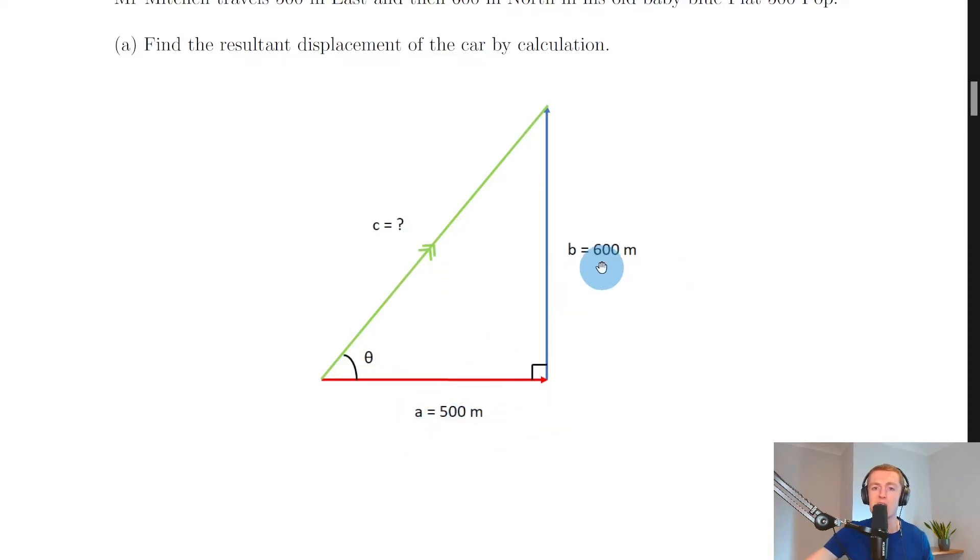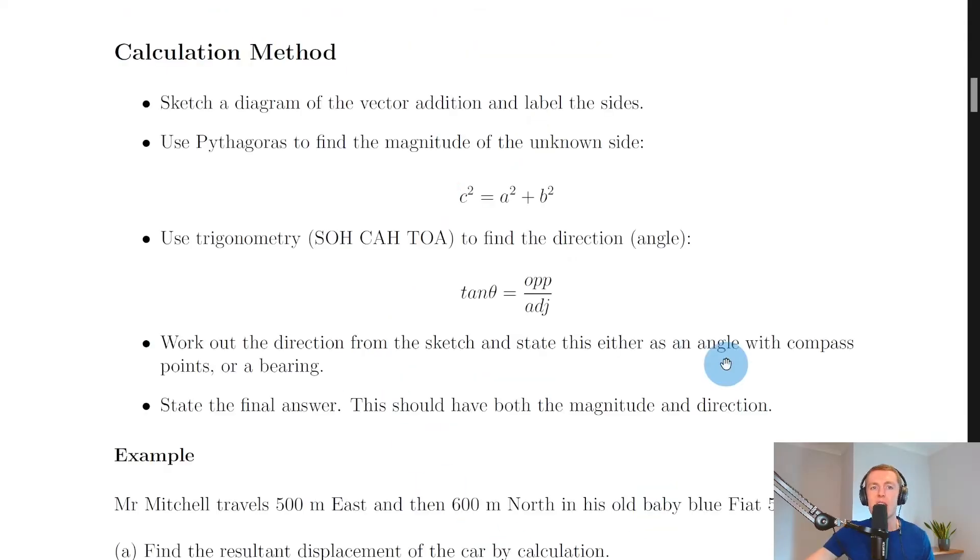We can then label the sides, so we've got 500 meters and 600 meters, and I've called those sides a and b, and then I've called the hypotenuse, i.e. the resultant vector, c. In this case I've then got a right angle triangle labeled here and my angle theta, which remember is always next to the starting point. So there was my first vector and the starting point, so the angle theta must be in here.